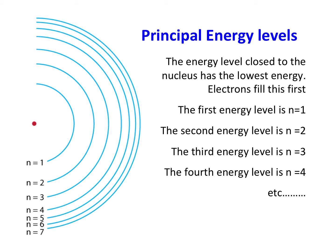On your periodic table, the horizontal rows or periods actually reflect these principal energy levels. There are a total of seven different rows on your periodic table and so there are seven different principal energy levels.